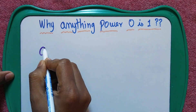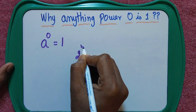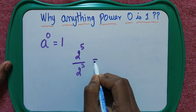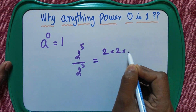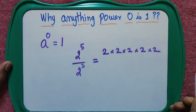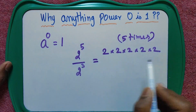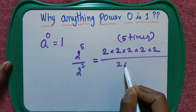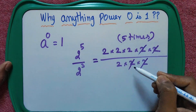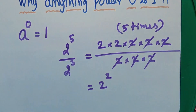How is anything to the power 0 equal to 1? Let's understand from an example. Consider 2 power 5 divided by 2 power 3. 2 power 5 can be written as 2 multiplied 5 times, and 2 power 3 as 2 multiplied 3 times. We can cancel out the common factors, and the remaining will be 2 into 2, which is 2 power 2.